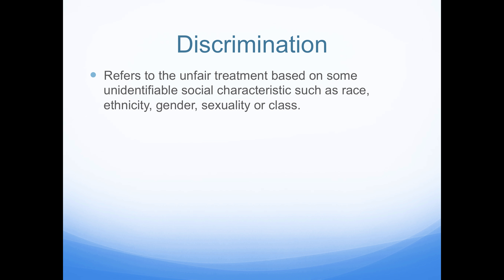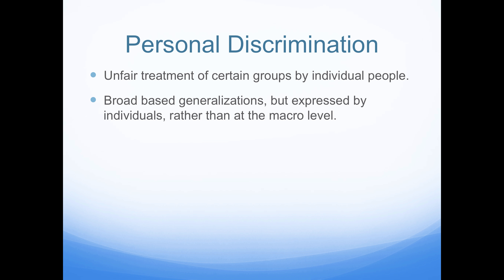Discrimination can operate at different levels. It can be at the personal level, but it can also be at the institutional level. Personal discrimination is unfair treatment of certain groups by individual people. It's based on broad generalizations but expressed by individuals rather than at the macro or institutional level.